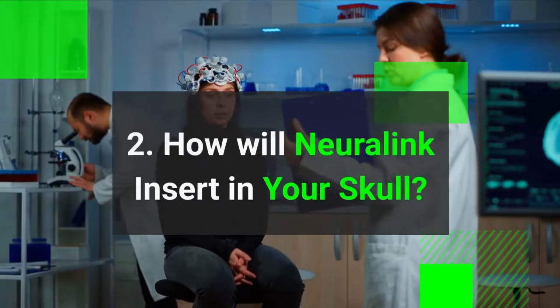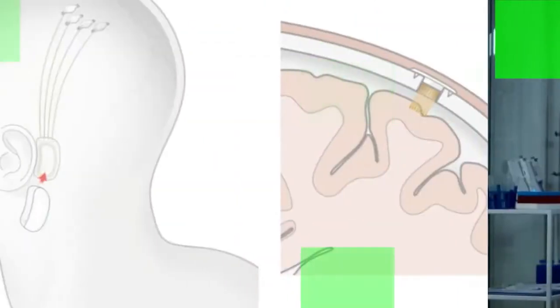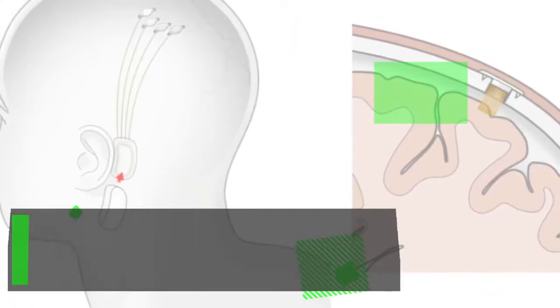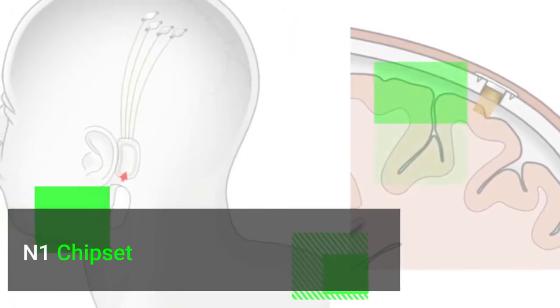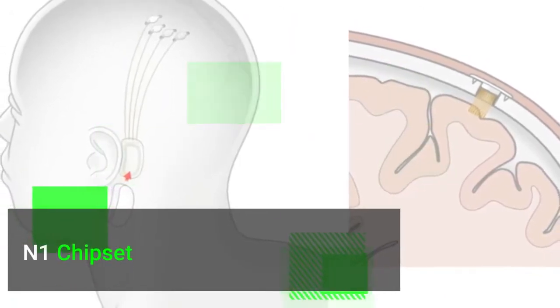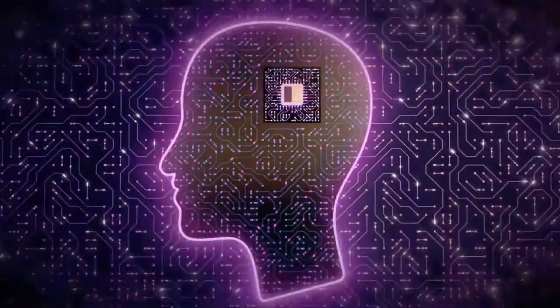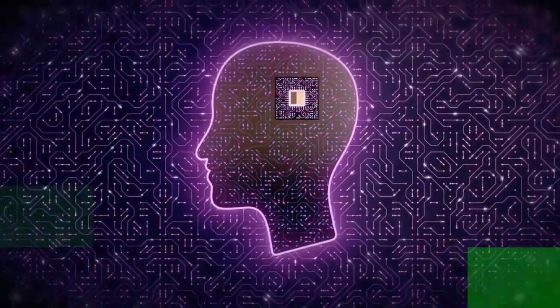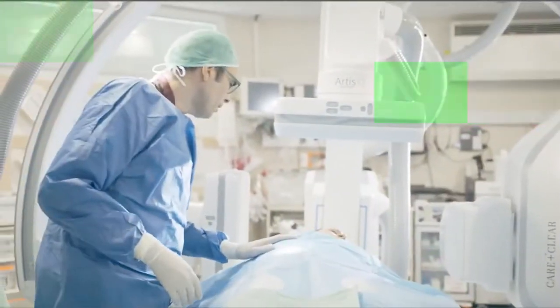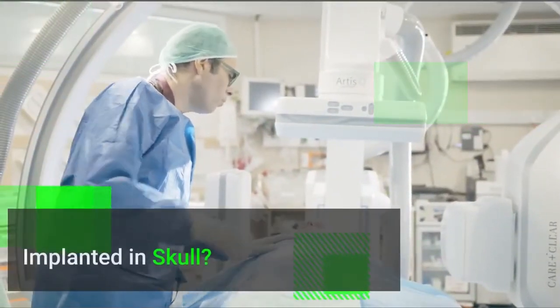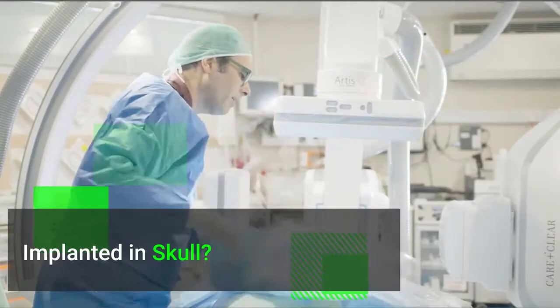How will Neuralink insert into your skull? Neuralink will be inserted in your skull with what is being called an N1 chipset, in Elon Musk's words. The chipset is 8 millimeters in diameter and has multiple wires housing electrodes and insulation for the wires. Okay, we have the setup, but how will it be introduced into our skull?